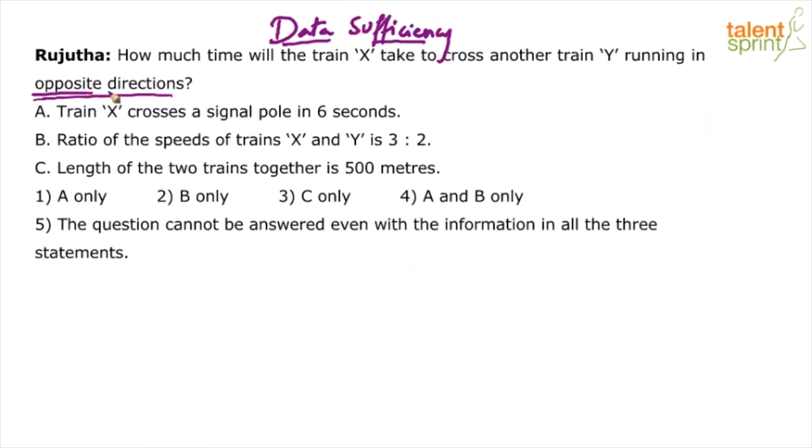So what happens when two trains are running in opposite directions? You know that the equation when two bodies are moving in opposite direction is sum of the speed equals the distance to be traveled by time. So I can say speed of X plus speed of Y equals length of X plus length of Y divided by time. That is the equation. So five variables altogether.